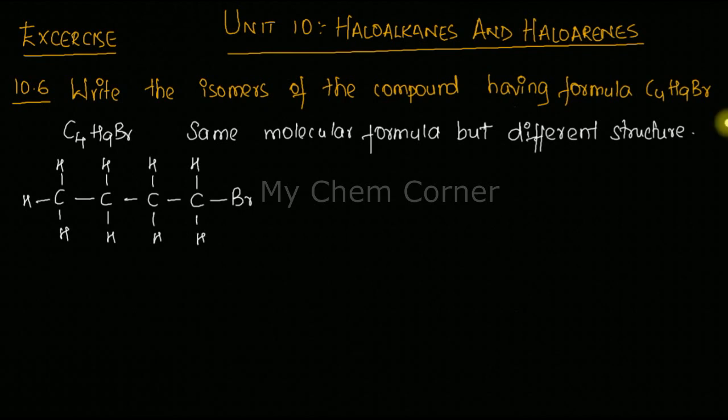Now let's count the number of hydrogens here, so it has one, two, three, four, five, six, seven, eight, nine. So I have four carbons, I have nine hydrogens, and I have a Br. The compound here is 1-bromobutane.